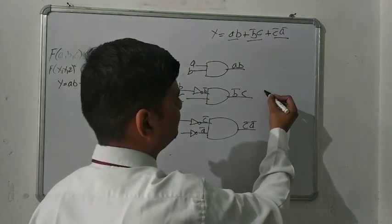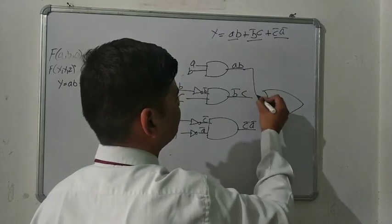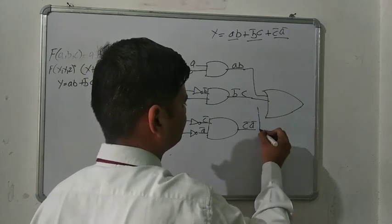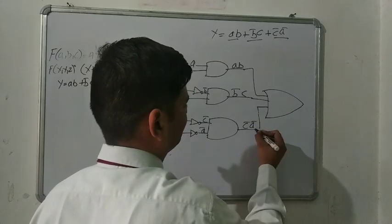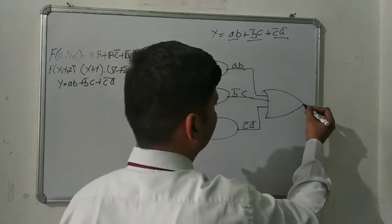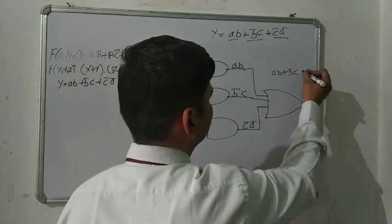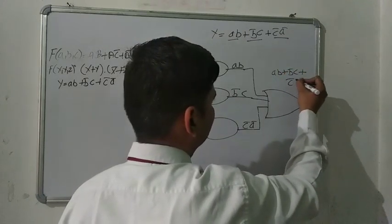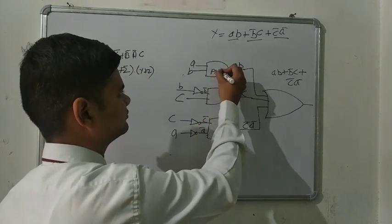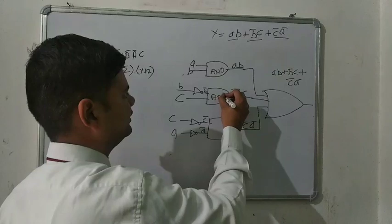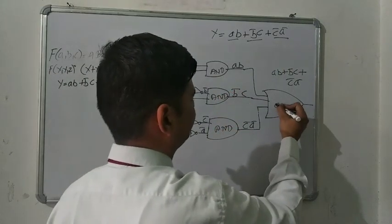So we draw the OR gate, and these are the three inputs for this gate. Finally we get the value of AB plus B̄C plus C̄Ā. These are the AND gates, AND gate again, AND gate, and then the OR gate.